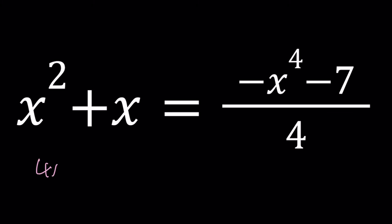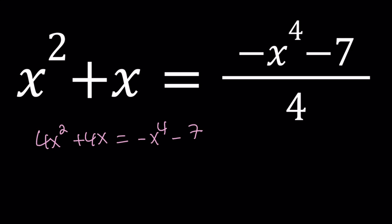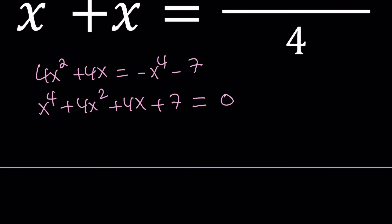4x squared plus 4x equals negative x to the fourth minus 7. And then we're going to add those terms on the right-hand side to both sides: x to the fourth plus 4x squared plus 4x plus 7 equals 0. Even though I said this is a full quartic, actually that is missing x cubed, so it's actually a depressed quartic.